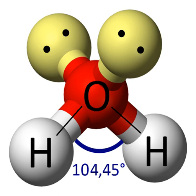Steric numbers of 7 or greater are possible but less common. The steric number of 7 occurs in iodine heptafluoride, and the base geometry for steric number 7 is pentagonal bipyramidal. The most common geometry for a steric number of 8 is square antiprismatic, exemplified by the octacyanomolybdate and octafluorozirconate anions. The nonahydridorhenate ion in potassium nonahydridorhenate is a rare example of a compound with a steric number of 9, which has a tricapped trigonal prismatic geometry.